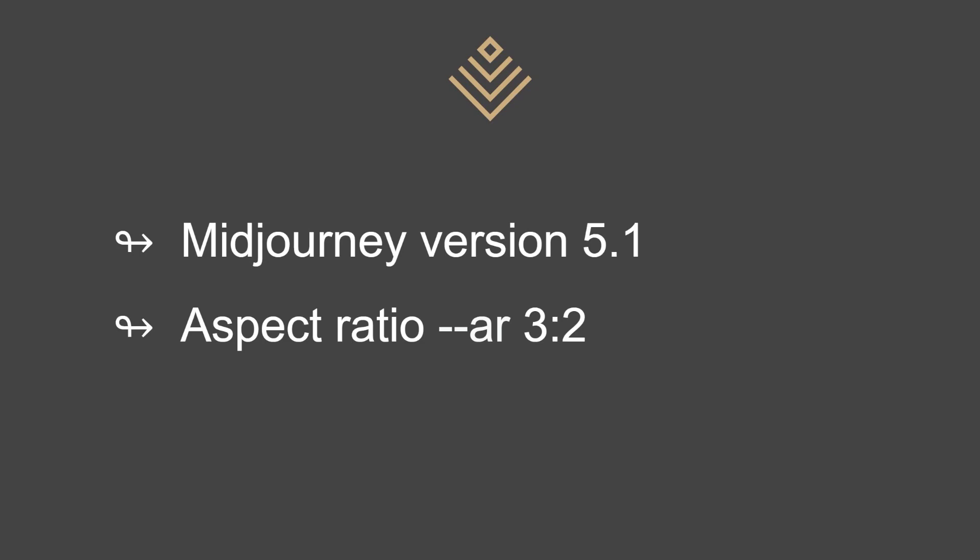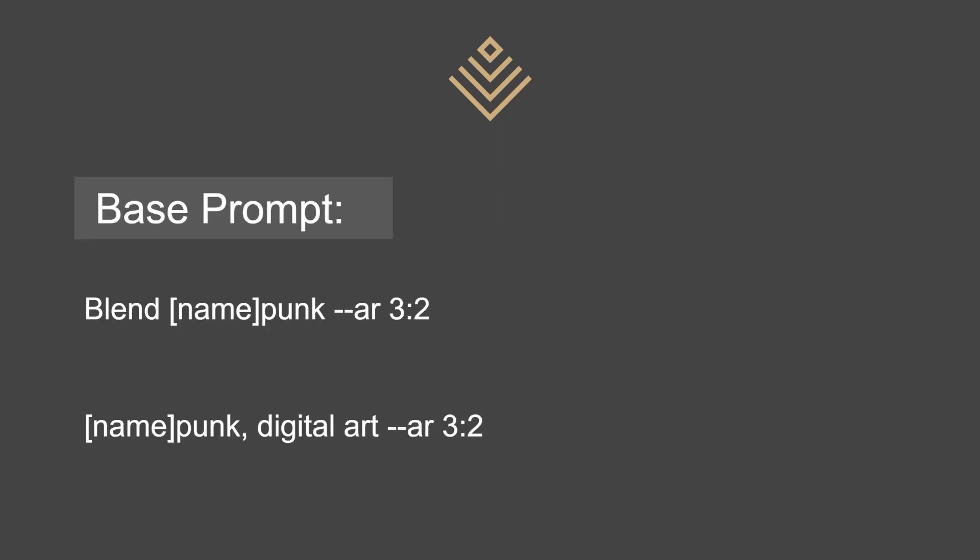I am using Mid-Journey version 5.1, which is the current default version. For this experiment I wanted to use the aspect ratio of 3 to 2, so I'm adding the aspect ratio parameter at the end of my prompts. The base prompt I'm using is actually a blend of two images — both created in Mid-Journey — and then I added the punk style name and the aspect ratio.